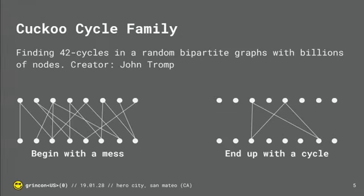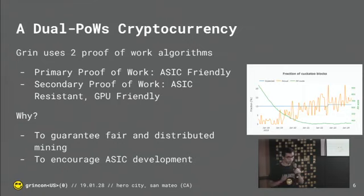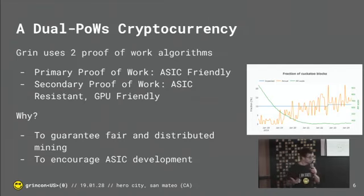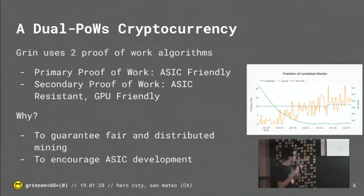In terms of proof of work — Grin uses two proofs of work, which are both derived from the Cuckoo Cycle family. Why two proofs of work? The first one, we call it the primary proof of work, and it's made to be ASIC-friendly, so people can develop ASICs for that, and in the future it will be really profitable to do so. The second one is the secondary proof of work, which is made to be ASIC-resistant and GPU-friendly.